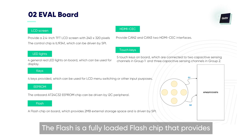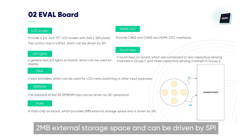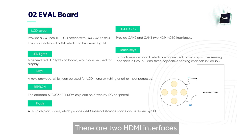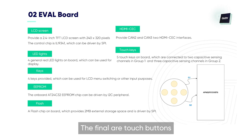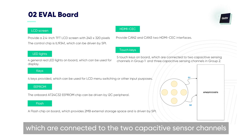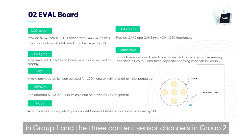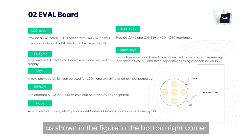The flash is a fully loaded flash chip that provides 2 MB of external storage space and can be driven by SPI. There are two HDMI interfaces, CN2 and CN3. Finally, there are five touch buttons, which are connected to two capacitive sensor channels in group 1 and three capacitive sensor channels in group 2, as shown in the figure in the bottom right corner.